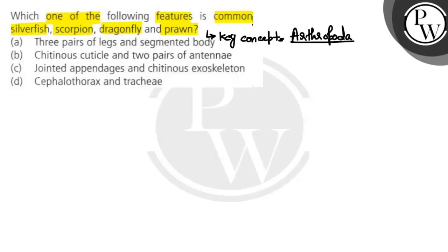If we talk about Arthropoda, you can understand the word. 'Arthro' means jointed, 'poda' means legs. So these organisms which have jointed legs belong to the Arthropoda phylum.